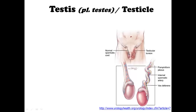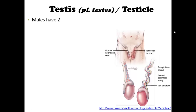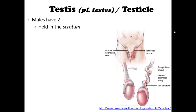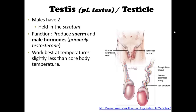Here's an image of the testes. Males have two testes and they are held in the scrotum, which we'll talk about in a few slides. Their function is to produce sperm and male hormones — testosterone is the primary male hormone.